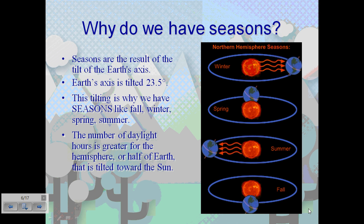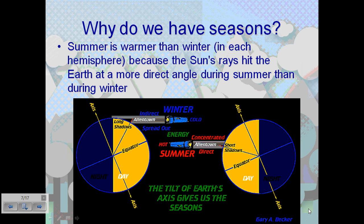The number of daylight hours is greater for the hemisphere, or half of Earth, that is tilted toward the sun. Summer is warmer than winter in each hemisphere because the sun's rays hit the Earth at a more direct angle during the summer. Looking at the image on the left, winter is cold — that area receives indirect sunlight, which usually results in a colder climate. On the right-hand side, you notice a concentrated amount of direct sunlight, which indicates summer, giving you an understanding of how the tilt impacts the seasons.